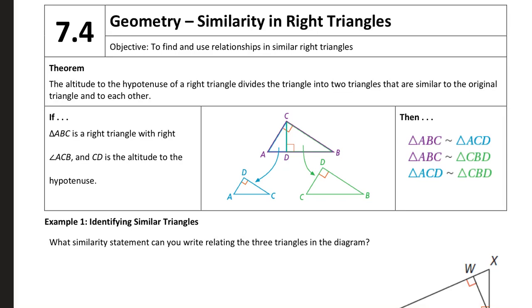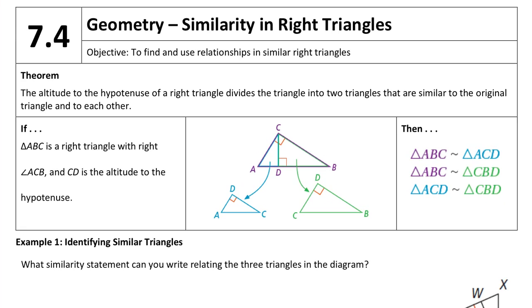Okay, so in Lesson 7.4, we're going to talk about similarity, specifically in right triangles. We're going to find and use relationships in similar right triangles. This lesson is a little tricky to set up the proportions, so I'm going to spend a little extra time explaining that. We're going to make a foldable, and we are going to go through plenty of examples together.